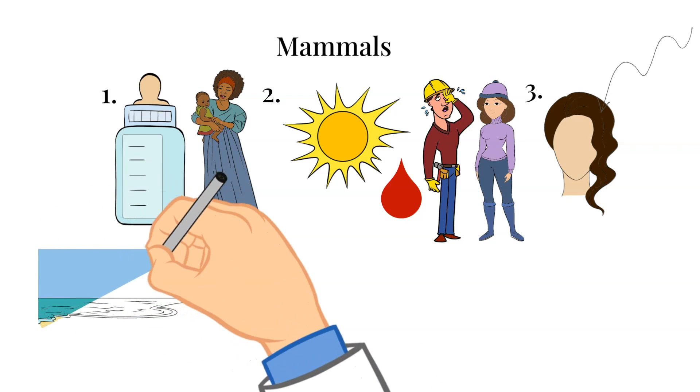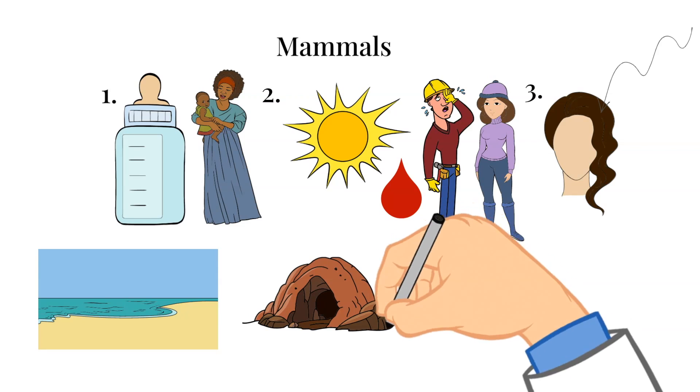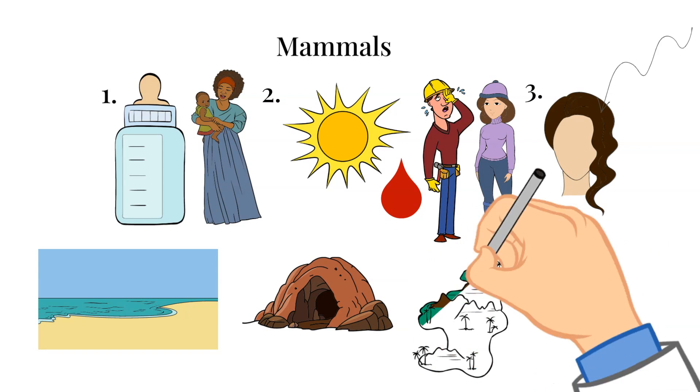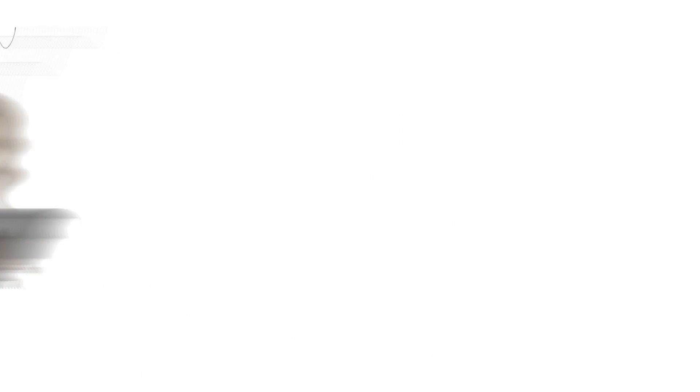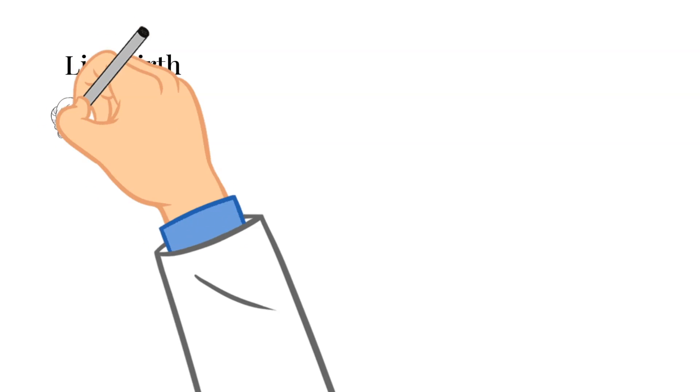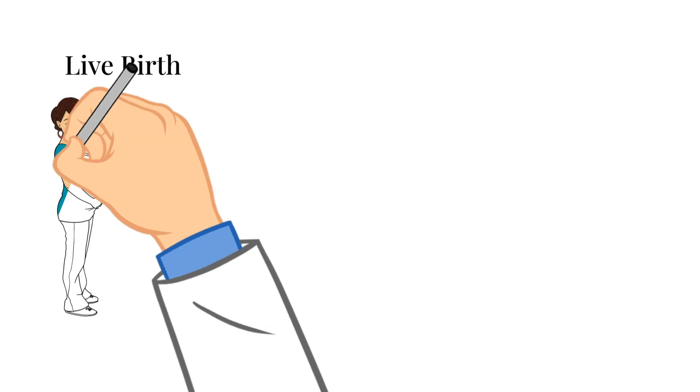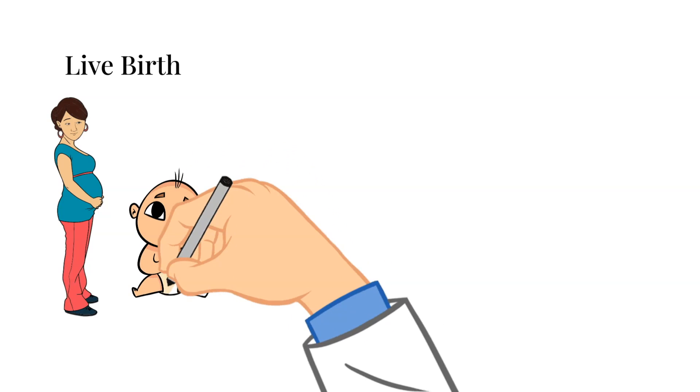Mammals can live in all types of environments, including the ocean, underground, or even on land. Some mammals can even fly. An example of a flying mammal is a bat. Mammals give birth and take care of their young in different ways. Most mammals typically give birth to live young, so they don't lay eggs.